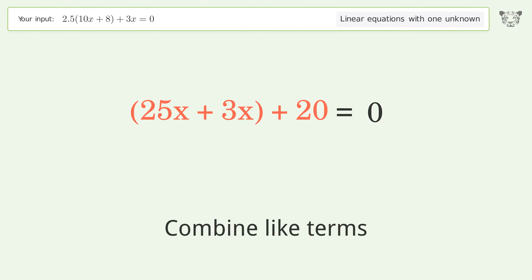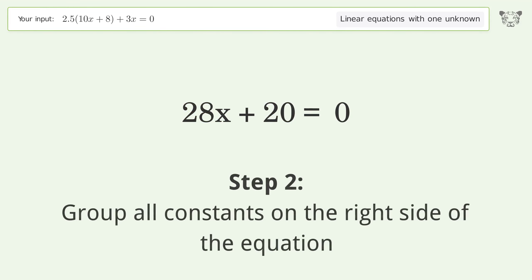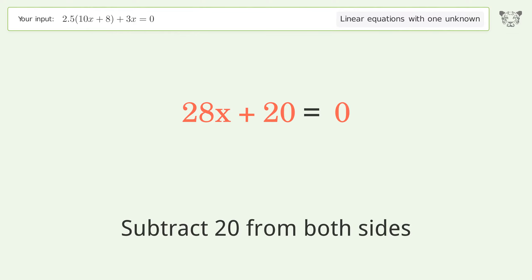Combine like terms. Group all constants on the right side of the equation. Subtract 20 from both sides.